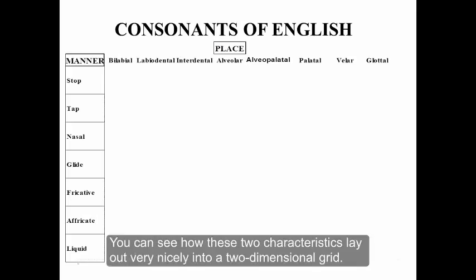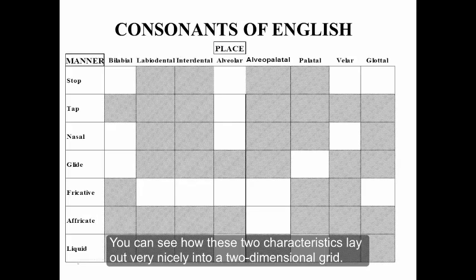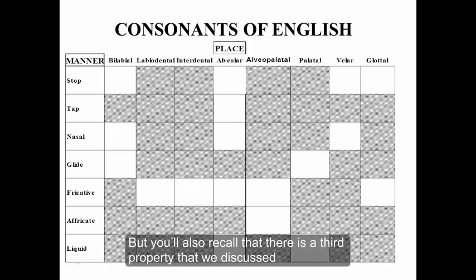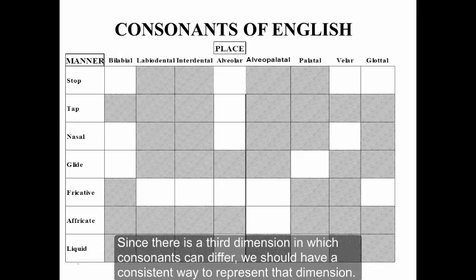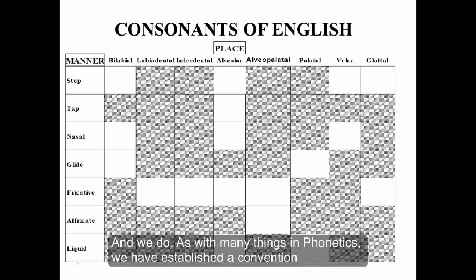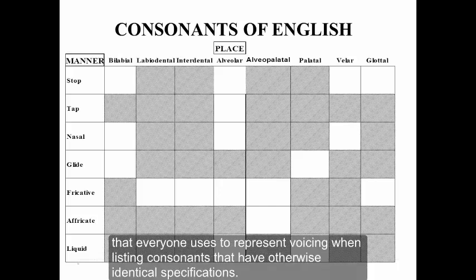Now you can see how these two characteristics lay out very nicely into a two-dimensional grid. But you'll also recall that there's a third property that we discussed that's relevant for consonants: voicing. Since there's a third dimension in which consonants can differ, we should have a consistent way to represent that dimension. And we do. As with many things in phonetics, we've established a convention that everyone uses to represent voicing when listing consonants that have otherwise identical specifications.